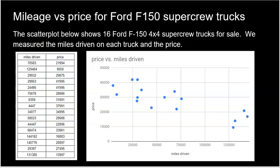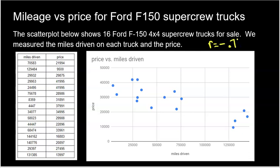Let's look at a solid example. We looked at 16 Ford F-150 4x4 SuperCrew trucks for sale. For every truck, we looked at how many miles were on it and the price it was selling for. So we have 16 values, and I already made a scatter plot. Is a linear model appropriate? I don't see a giant curve. The correlation is probably going to be negative — it's definitely going down. Maybe around negative 0.7 would be a good correlation here. That's not weak by any means. I definitely see something linear going on here.